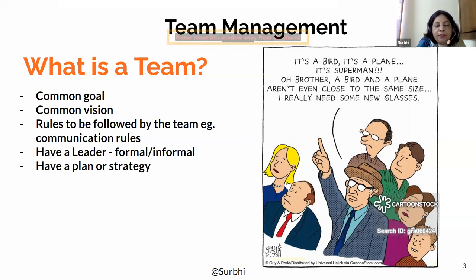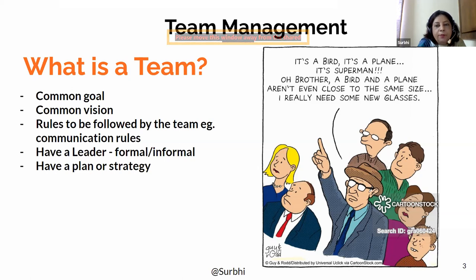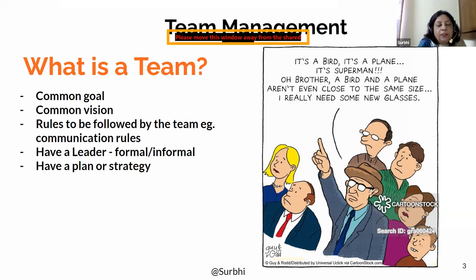In a team, there could be some leaders — there could be a formal leadership or an informal leadership. Formal leadership comes in terms of hierarchy, like the team leader and then there are team members. But sometimes informally, a person may become a leader because of his personality or because everyone tends to follow him. The whole team will have to have a plan or strategy, and the objective needs to be very clear among all the people.